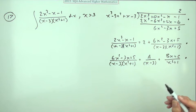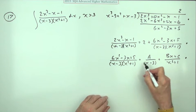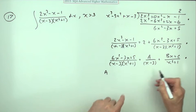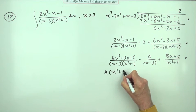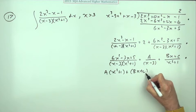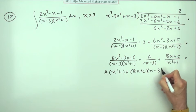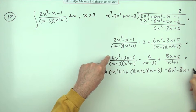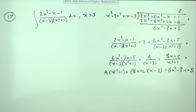Now we need to multiply this out. Multiplying through by the denominator, we've got A times (x² + 1) plus (Bx + C) times (x - 3) should equal 6x² - 3x + 5. That's another mark, there's 4 so far.